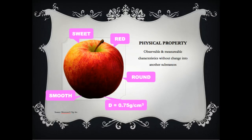Other physical properties can include conductivity, whether the object is malleable, whether it is flexible, and whether it is a solid, liquid, or gas. These are just some of the other ways that you can describe an object based on its physical properties.